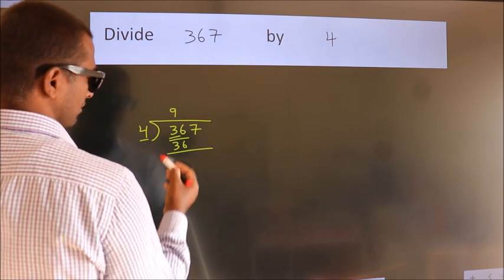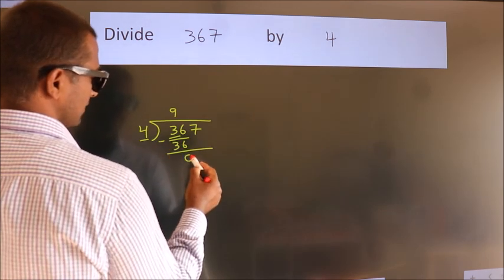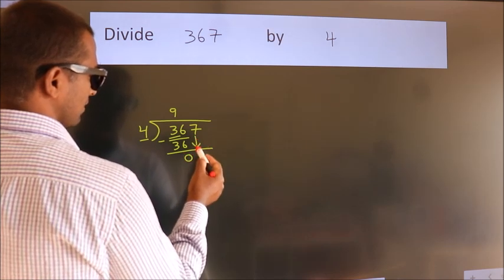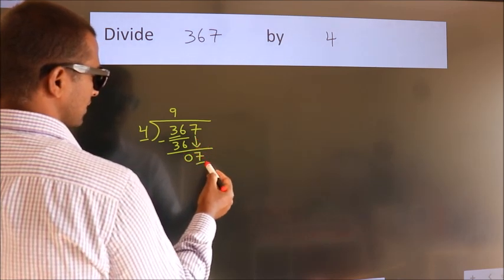Now we should subtract. We get 0. After this, bring down the beside number, so 7 down.